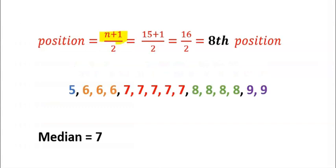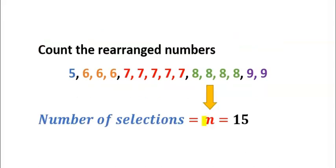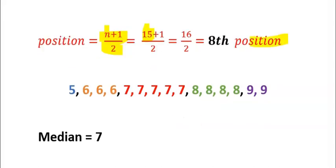Let's find the median. Use the formula (n+1) divided by 2 to point to the position where the median is located. You can see here that our n is 15, which was obtained from the number of selections. Median is located at the eighth position.